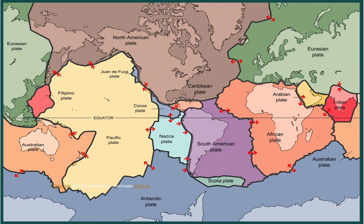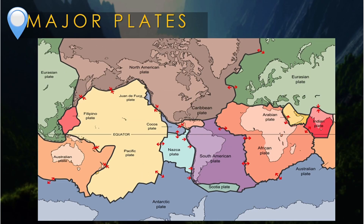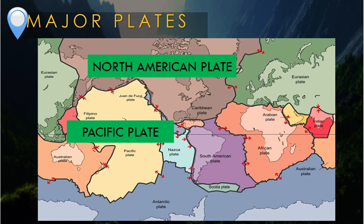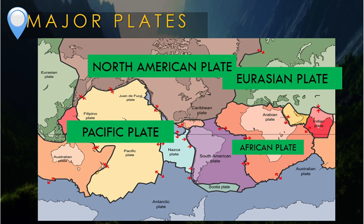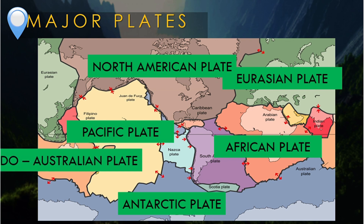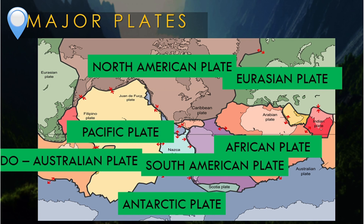Here are the tectonic plates identified by scientists. The major plates have an area of more than 20 million square kilometers: Pacific plate — 103,300,000 sq km; North American plate — 75,900,000 sq km; Eurasian plate — 67,800,000 sq km; African plate — 61,300,000 sq km; Antarctic plate — 60,900,000 sq km; Indo-Australian plate — 58,900,000 sq km; and South American plate — 43,600,000 sq km.